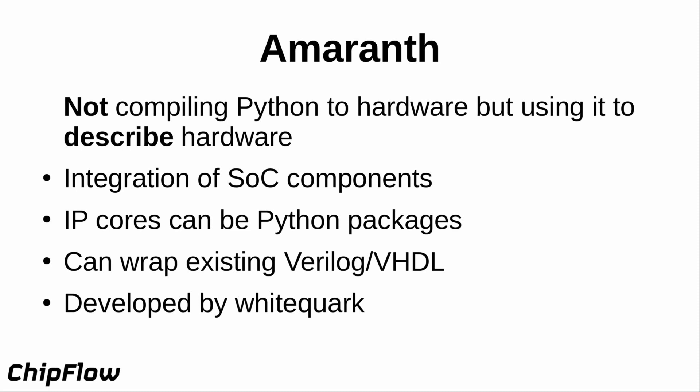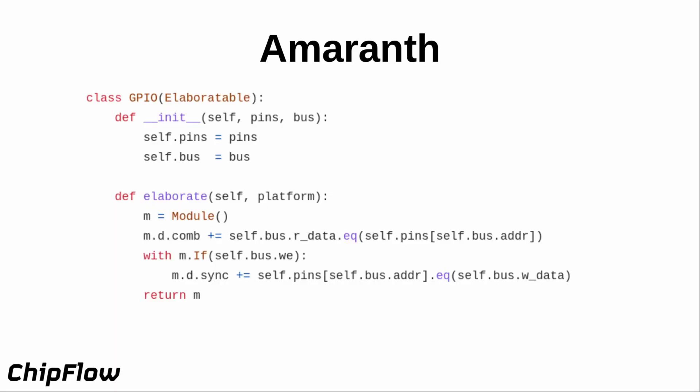The bulk of Amaranth development was done by WhiteQuark Catherine. Here's a brief example of a small piece of Amaranth code — a very simple GPIO IP core. We start with a typical Python class with pins and bus fields. The elaborate function is where the magic happens and where we're actually creating the hardware. We set up an empty module, then in the combinational logic we set the read data returned onto the bus equal to the current state of the pins, and if the write enable is active, we set the pin values to the write data from the bus.